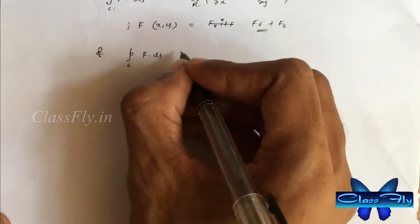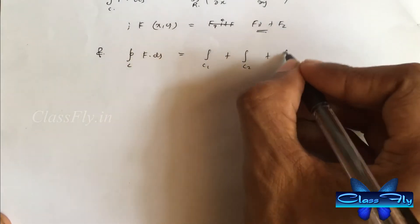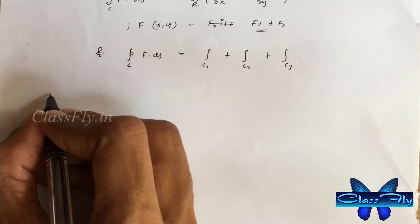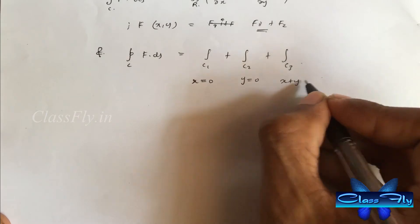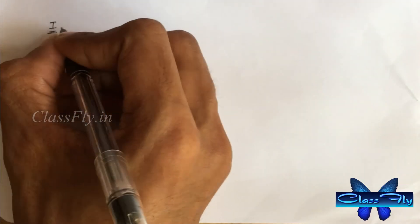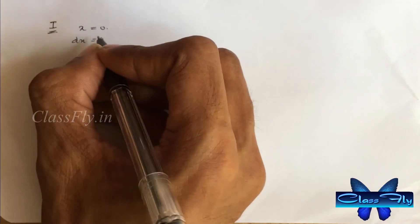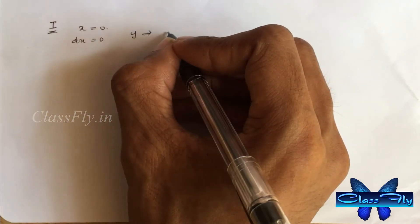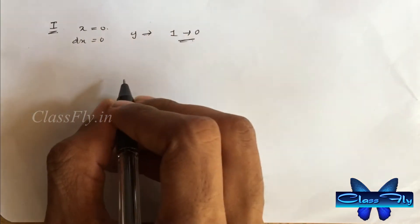Closed integral f dot ds is equal to integral c1 plus integral c2 plus integral c3. We can split this curve c into three parts since we have three lines. So the first one is x equal to 0. Here dx equal to 0, y varies from 1 to 0.